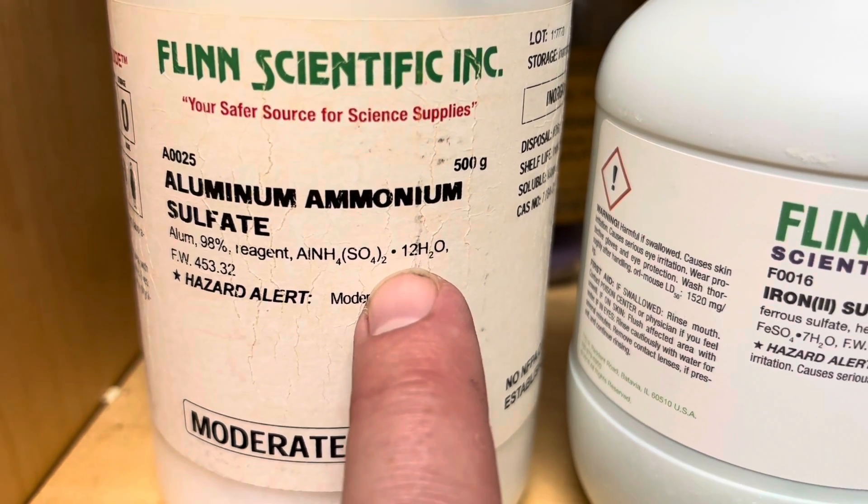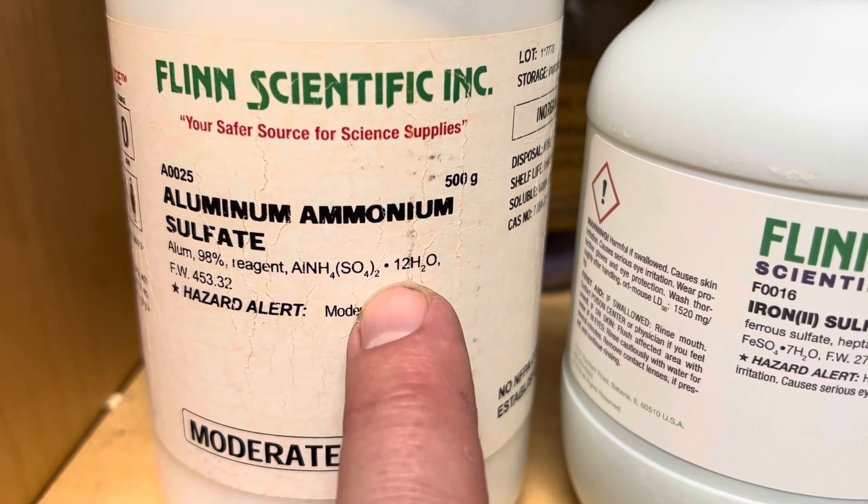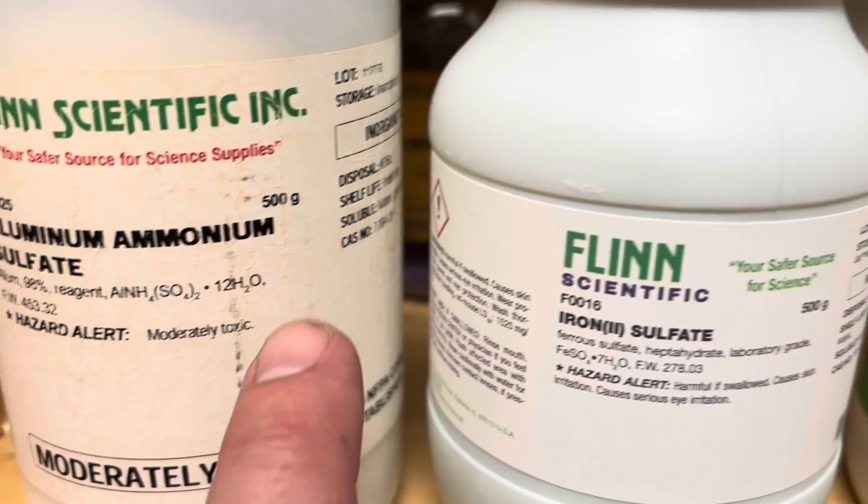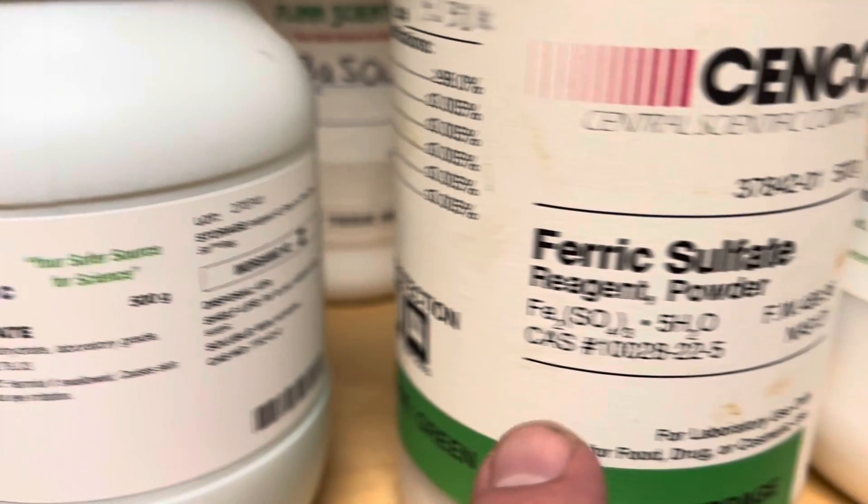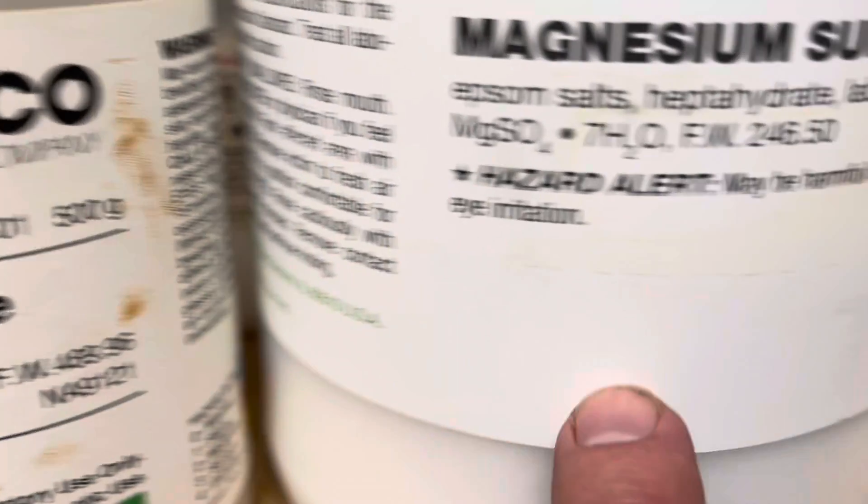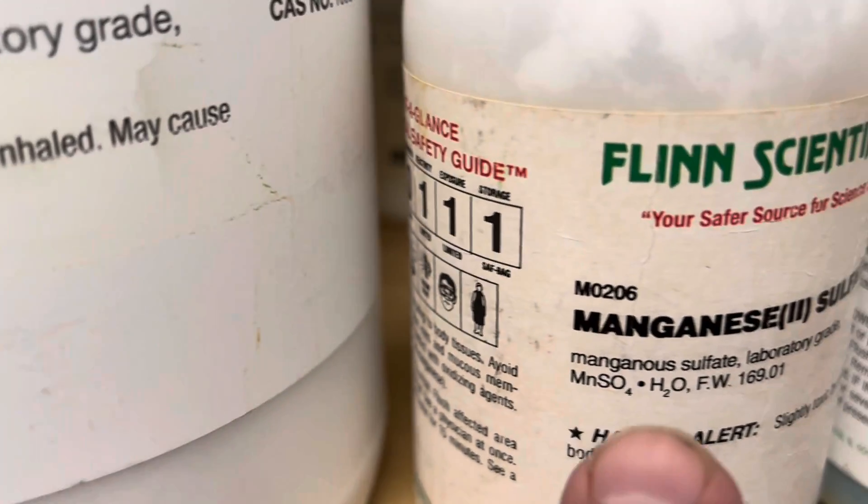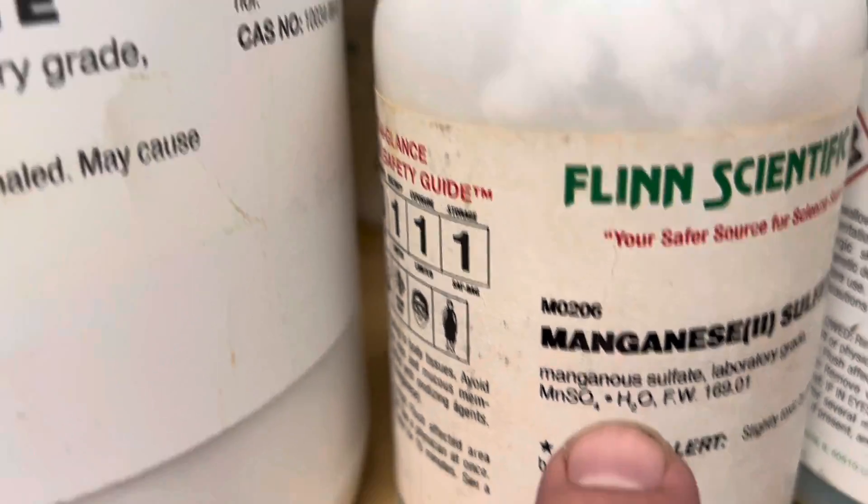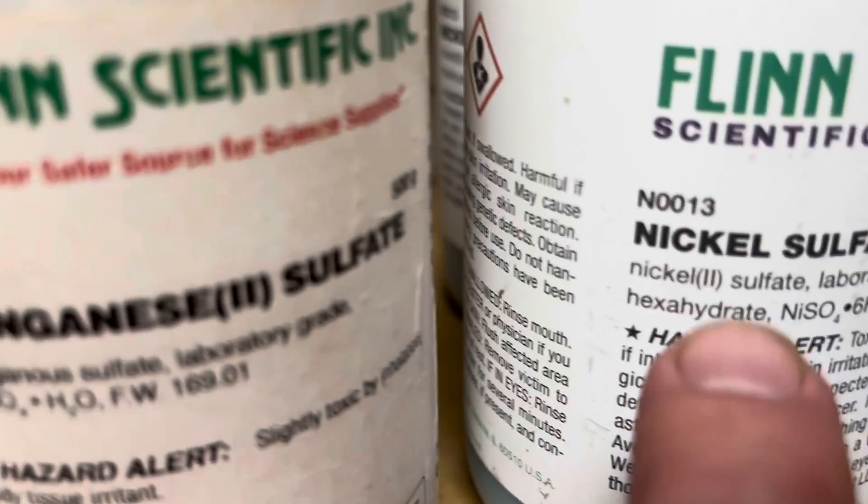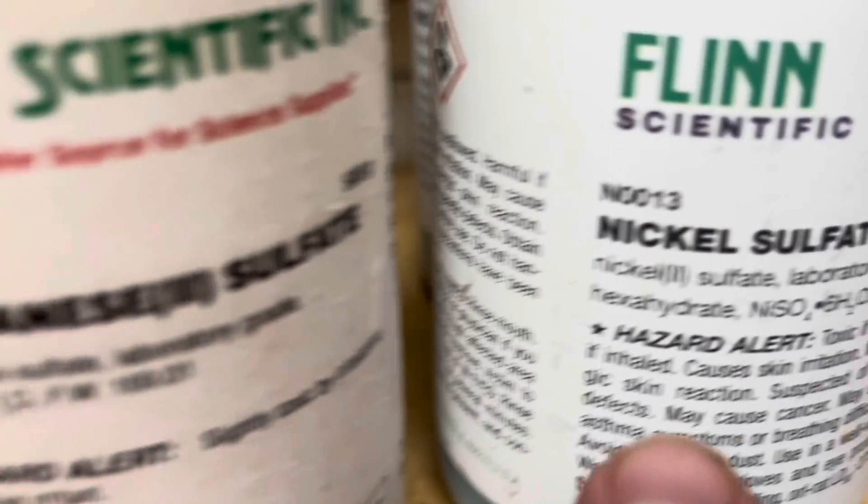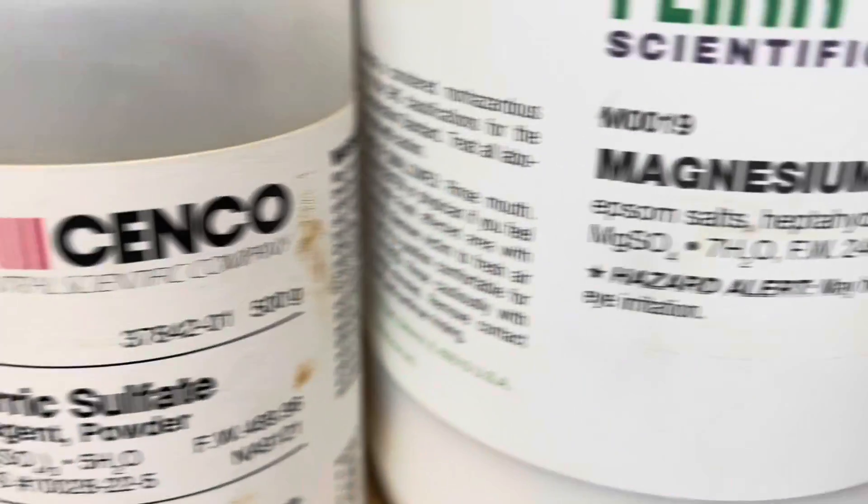Here are several sulfate compounds that are also hydrates. This one is aluminum ammonium sulfate with 12 waters of hydration. They're not always that big. This one only has seven. Ferric sulfate has five. Over here we have manganese sulfate with just one water of hydration, and nickel sulfate with six. So it turns out a lot of sulfates are hydrated compounds.